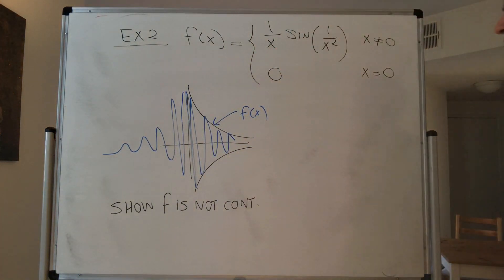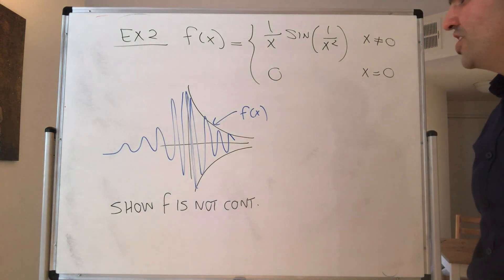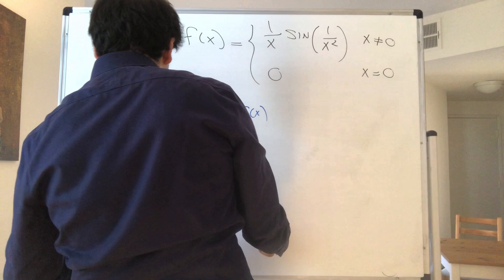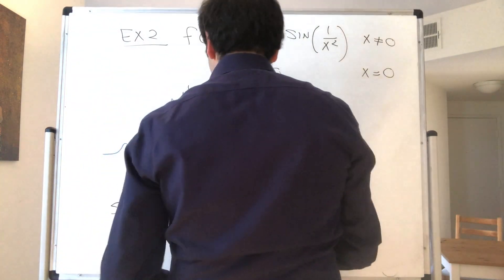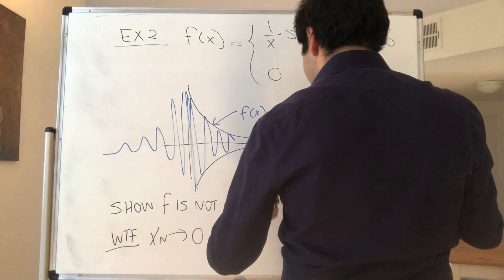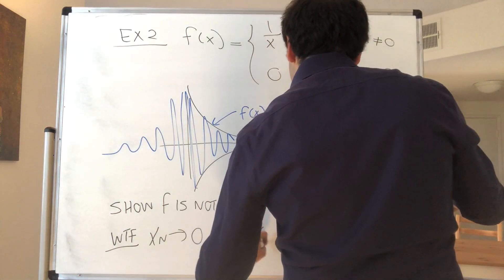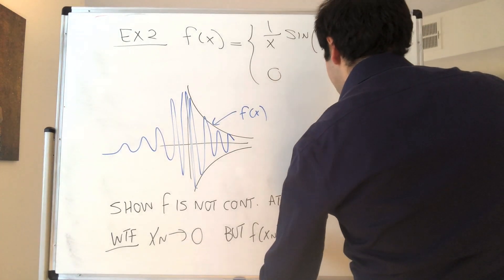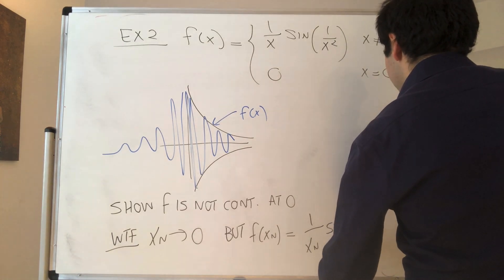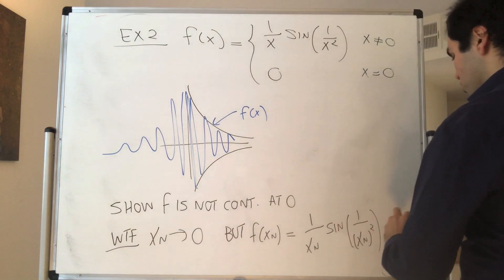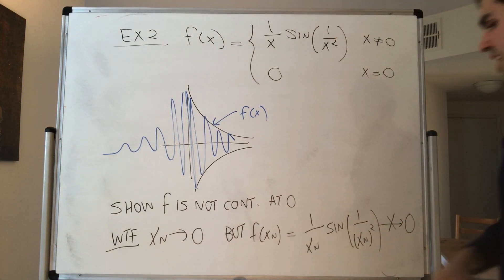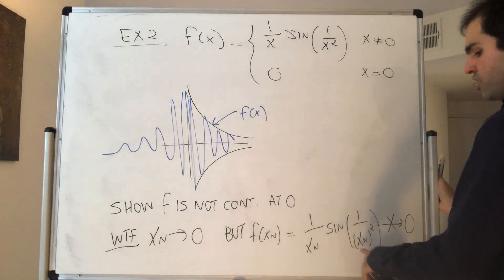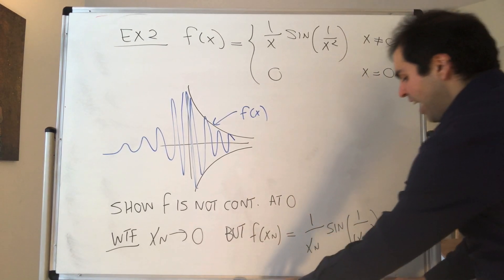You could do it with epsilon-delta, but it's actually easier to do it with the sequence definition. For example one, it was harder with the sequence definition. So what we want to do is find x_n converging to 0 — we want to show it's not continuous at 0 — such that f of x_n, which is 1 over x_n times sine of 1 over x_n squared, does not go to 0. The sine term is a little annoying, so let's try to eliminate it by choosing x_n such that sine of 1 over x_n squared equals 1.